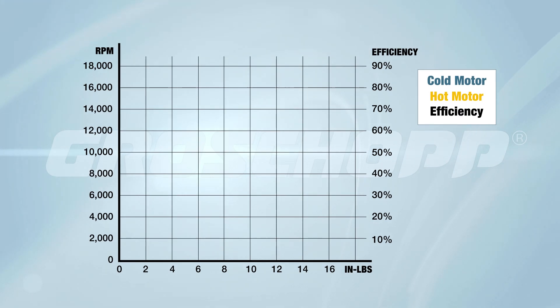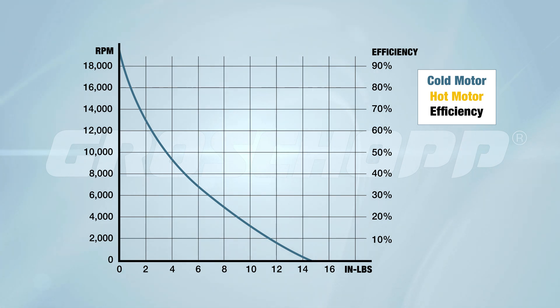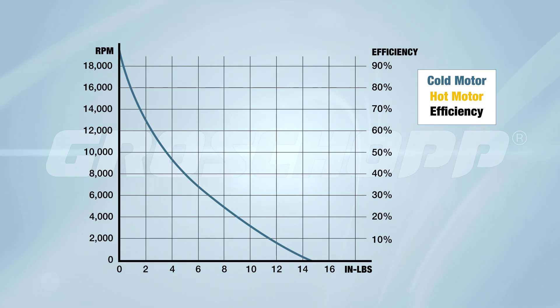Here we have the typical speed-torque curve of the universal motor. This is the cold motor curve and you can see that it's fairly linear with good starting torque. The sharp upward curve as the torque decreases is a unique characteristic of the universal motor.